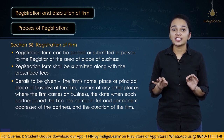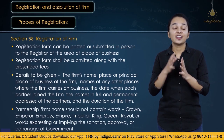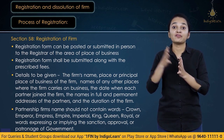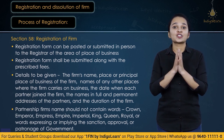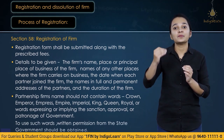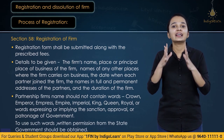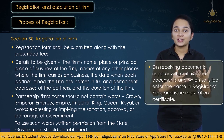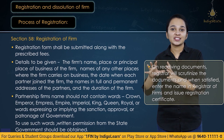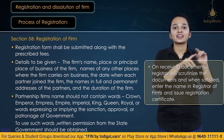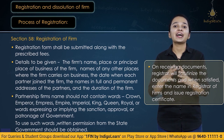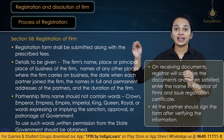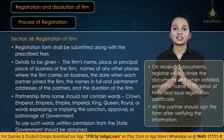The name of a partnership firm should not contain terms such as king, queen, royal, charter, imperial, or any word giving an impression of government association. Written permission from the state government is required to use such terms. Once the registrar receives documents, he scrutinizes them and on being satisfied, registers the firm, enters it in the register of firms, and issues a certificate of registration. All partners must sign and verify the information in the form.